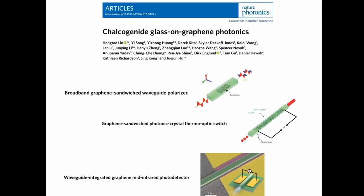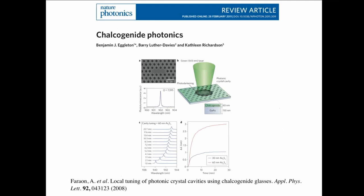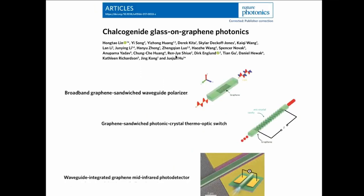Regarding transition speed: photodarkening cannot be sped up to picoseconds or microseconds — maybe from minutes to seconds — but increasing temperature also erases the written information, limiting the speed-up. There are also Nature Photonics papers on devices combining chalcogenide glass with graphene for various photonic applications.